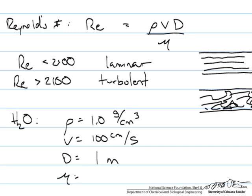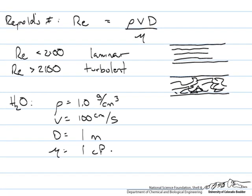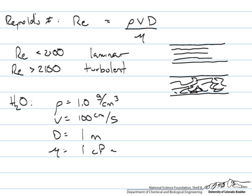And then the viscosity of water is about a centipoise. And a centipoise is equivalent to 1 times 10 to the minus 3 kg per m second.